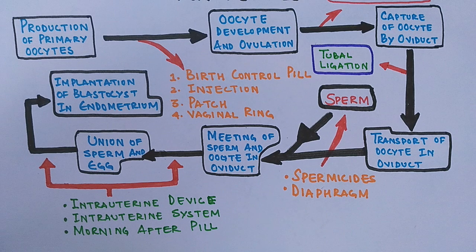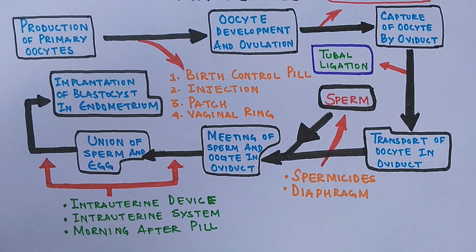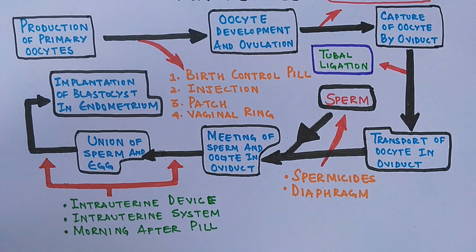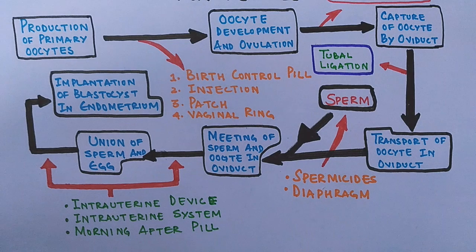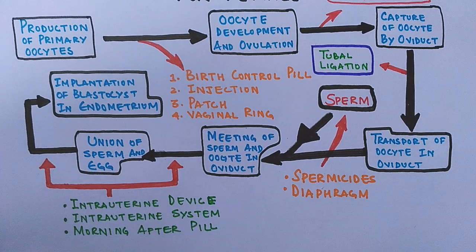Finally, we have the morning after pill, also called Plan B One-Step — an emergency contraception used to control pregnancy. People call it the morning after pill, but it can be taken any time after having intercourse. The pill contains levonorgestrel, which is used in lower doses in many birth control pills. It may prevent or delay ovulation, or it may interfere with fertilization of an egg, thus controlling the pregnancy.